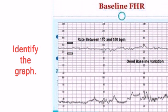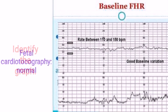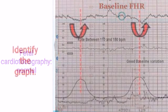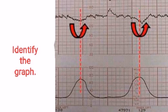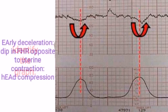Identify the graph: Fetal Cardiotocography — Normal. Identify the graph: Early deceleration, seen in fetal head compression.